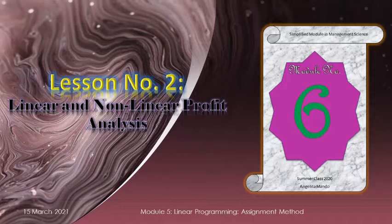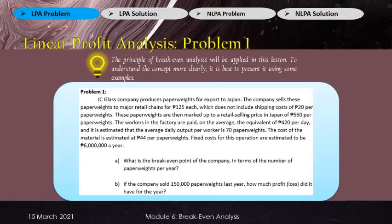So as we all know, the primary goal of the business is to earn profit and the business owner is looking forward to run the business in the long period of time. In problem 1, the JC Glass Company produces paper waste for export to Japan. We need to find the important amounts to get the break-even point and the profit.